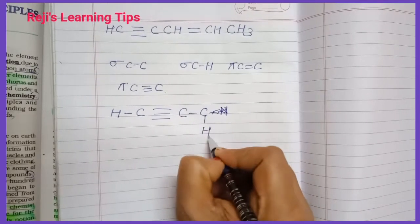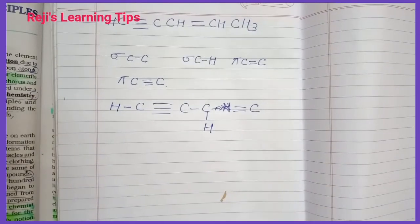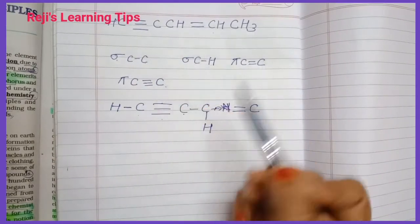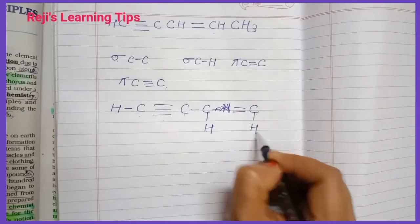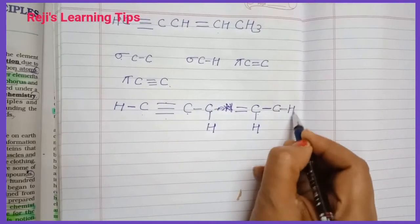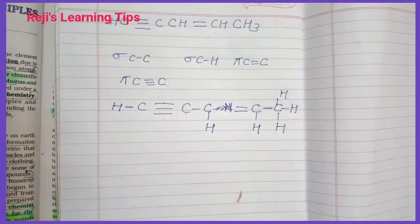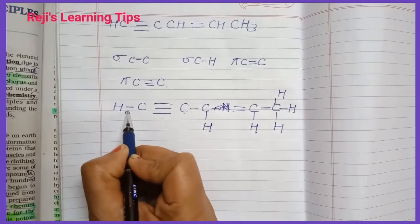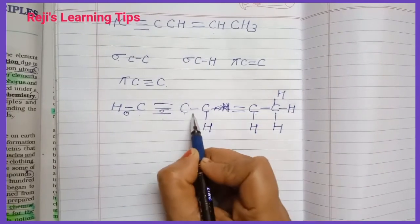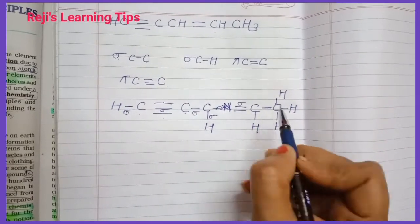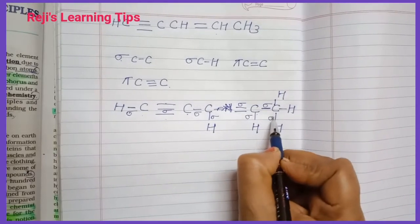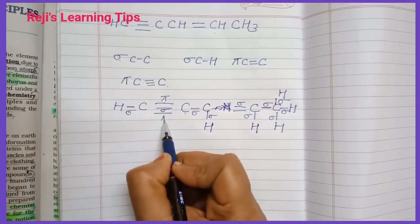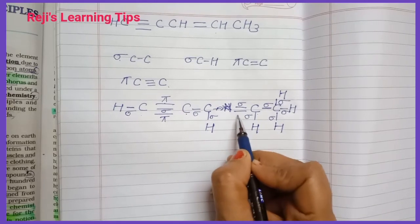For a double bond C=C, there is one sigma bond and one pi bond. For a triple bond, there is one sigma and two pi bonds. A single C–C bond is one sigma bond only.